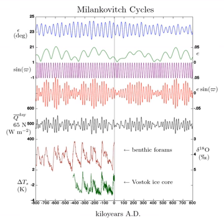Milankovitch cycles describe the collective effects of changes in the Earth's movements on its climate over thousands of years. The term is named for Serbian geophysicist and astronomer Milutin Milankovitch.